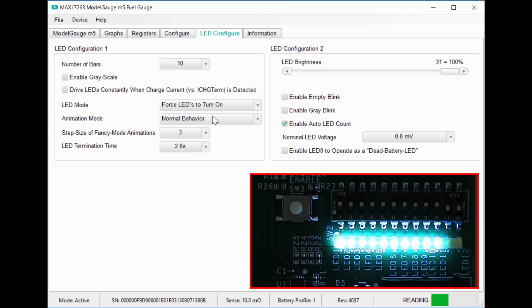The grayscale feature adds half steps by dimming the last LED. This lets you get higher state of charge resolution for a given number of LEDs. With 10 LEDs, the first half step would be at 97.5 percent. Right now, the battery is at 97 percent, so if I toggle the setting, you can see LED 9 going between full and half brightness.